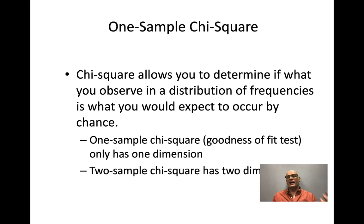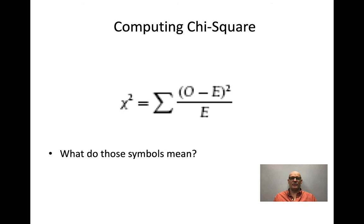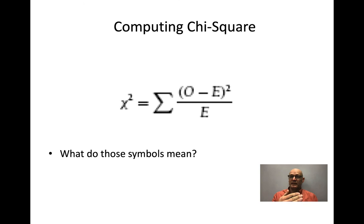A chi-square test allows you to determine if what you observe is similar to what you would expect by chance. A one-sample chi-square is a goodness-of-fit test with one dimension; a two-sample chi-square has two dimensions. The core idea is that we add up the differences between what we observe and what we expect, normalized by dividing by what we expect, to see if those differences are big enough to say that something is different.